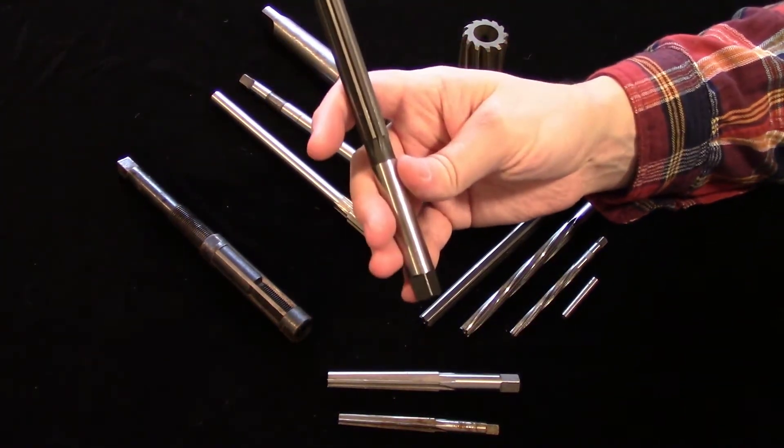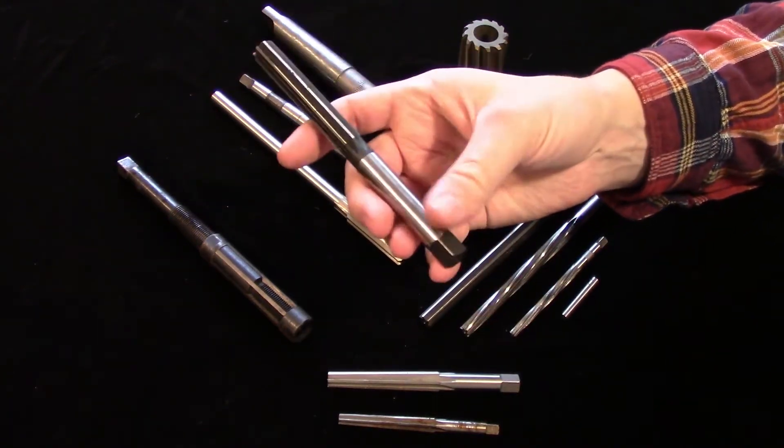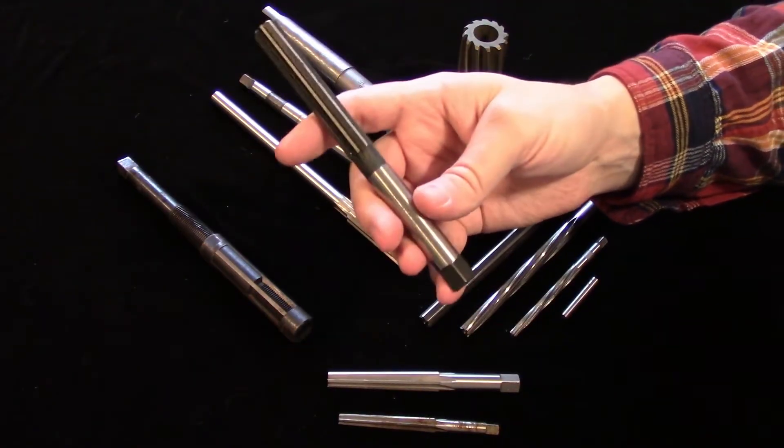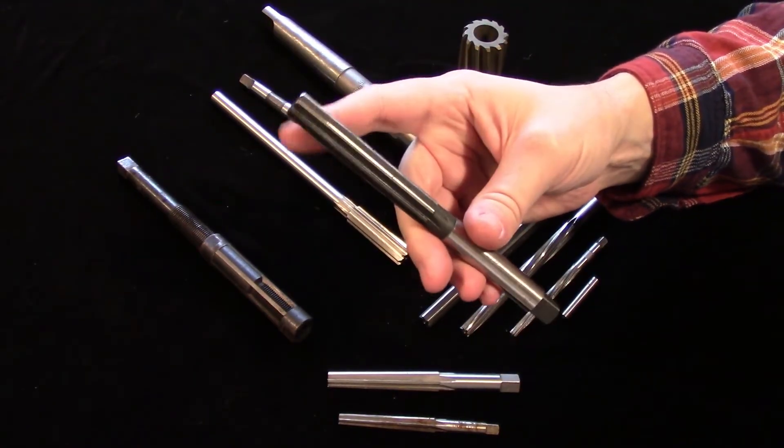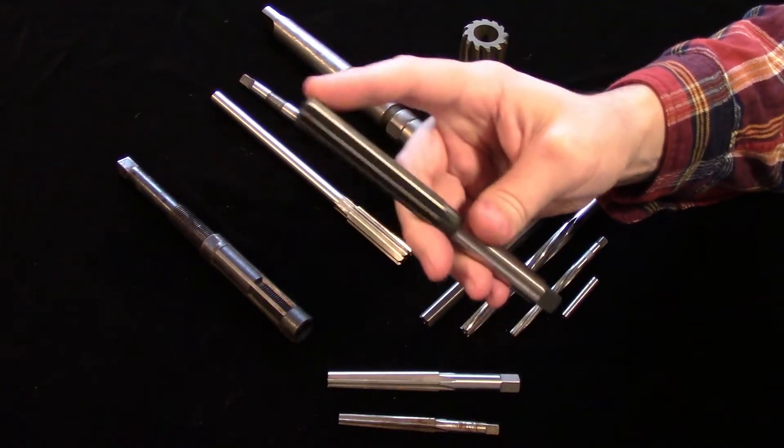These are hand reamers and are not meant to be run under power on a machine. Instead, these are meant to be turned with a tap wrench. Hand reamers have longer flute lengths than normal, and the flutes are slightly tapered at the beginning to aid in getting the reamer straight into a hole.